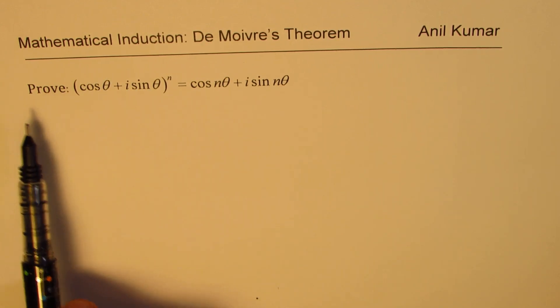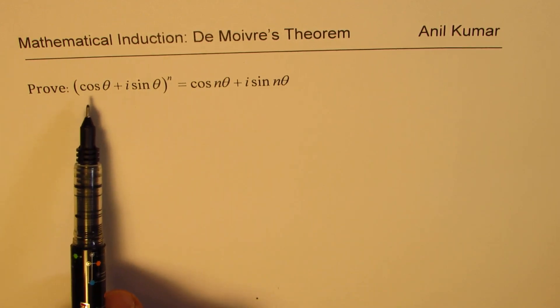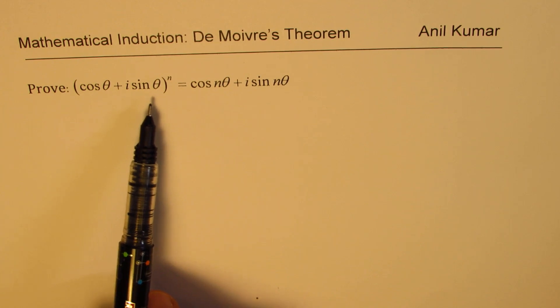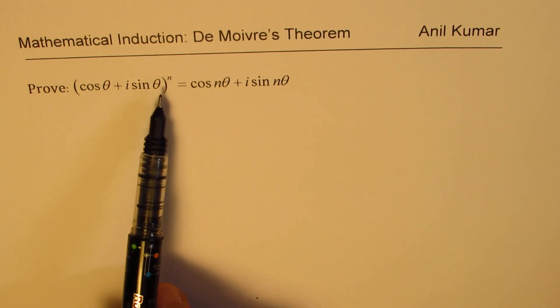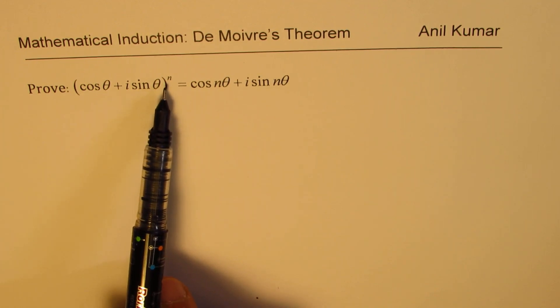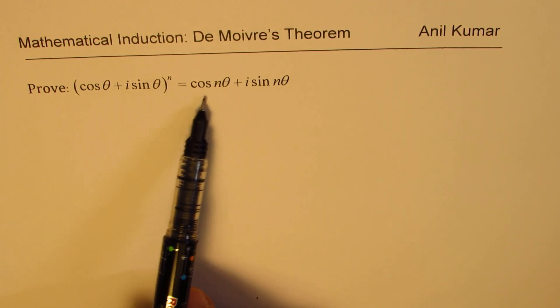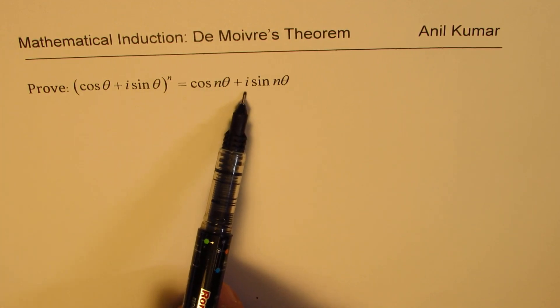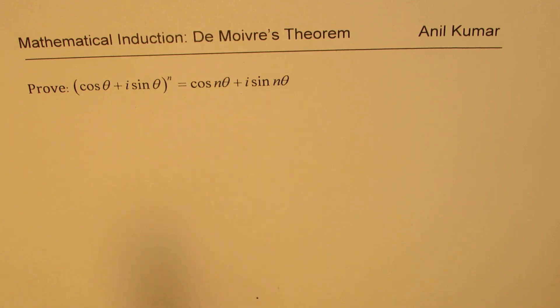We need to prove that (cos θ + i sin θ)^n = cos(nθ) + i sin(nθ).